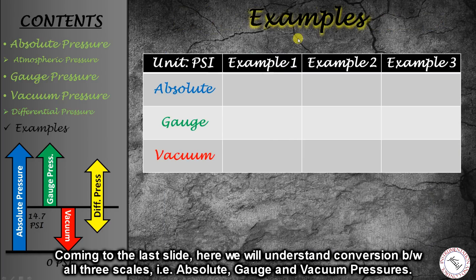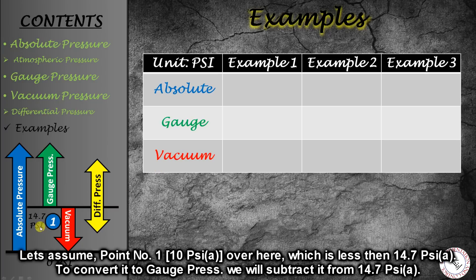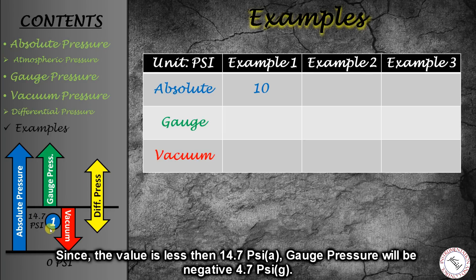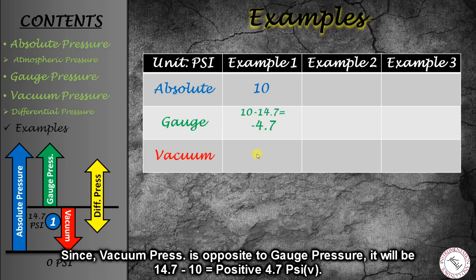Now we come to our last examples, where we practice converting between pressure scales. Point number one is below 14.7 psi absolute. If our absolute pressure is 10 psia, converting to gauge pressure: 10 minus 14.7 gives minus 4.7 psig. Converting to vacuum pressure — which is opposite to gauge — it is 14.7 minus 10, which gives positive 4.7 psiv.